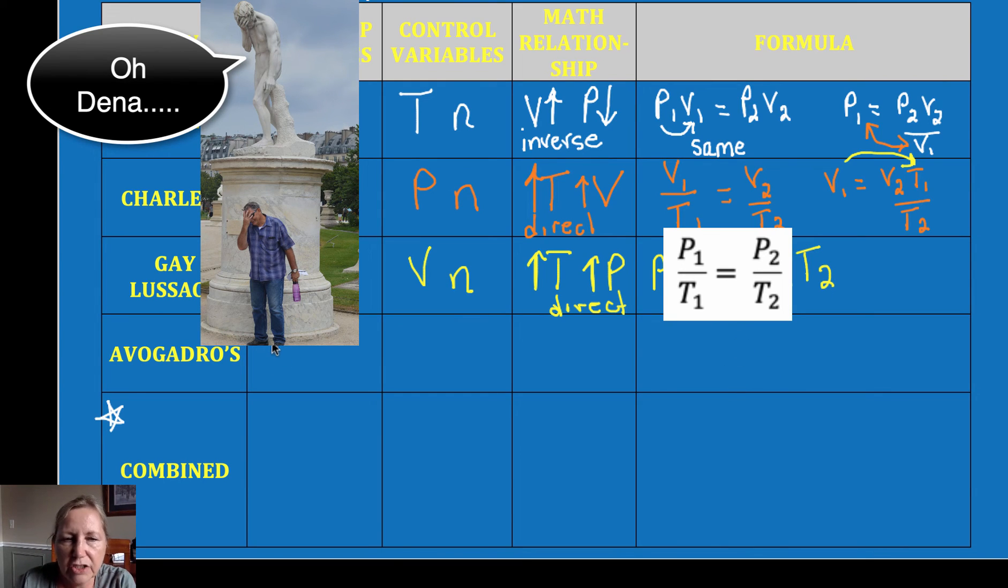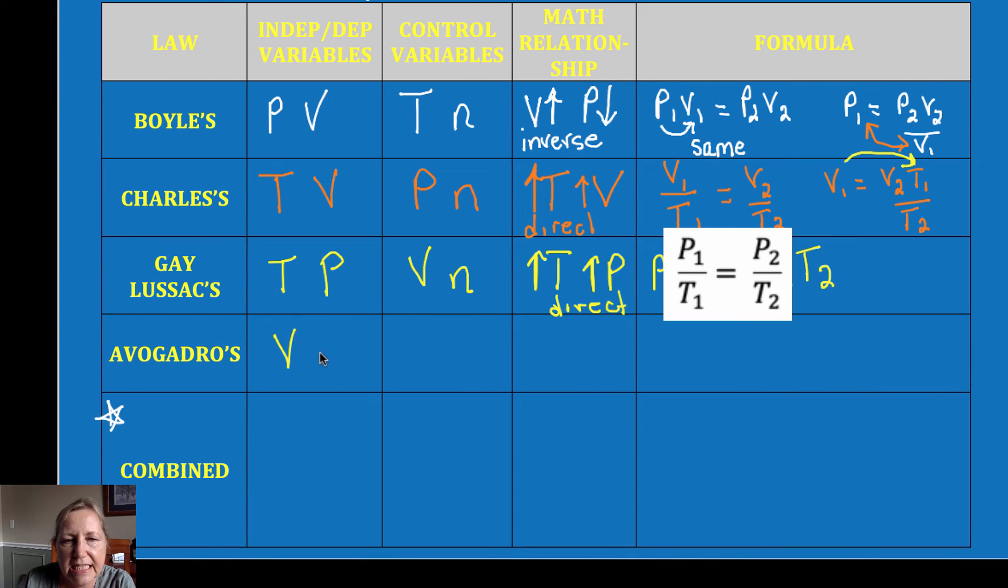All right. Now, finally, we have Avogadro. Avogadro, hopefully not surprisingly, studied moles, volume and moles. And so therefore, we're going to keep temperature and pressure constant. You put more air into a balloon, the balloon's going to expand. So you increase the moles, you increase the volume. So that's a direct relationship. Okay. And I made a mistake here. Sorry about that. P1 over T1 is equal to P2 over T2. Make sure you fix that. Okay. And I'll annotate that in the video. So we would have V1 over N1 is equal to V2 over N2.